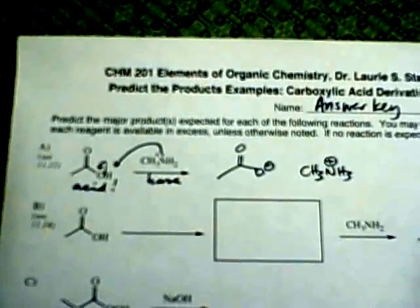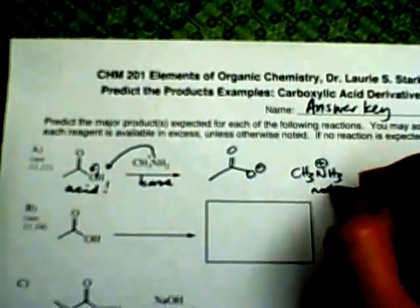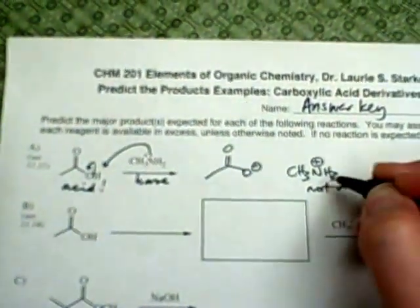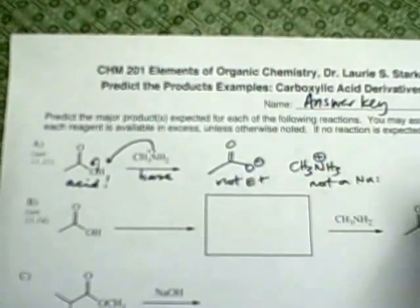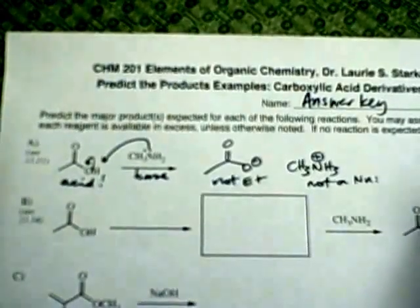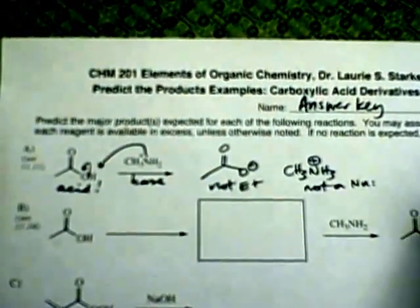And once that happens, this is no longer a nucleophile because it's protonated. You don't have a lone pair. This is no longer an electrophile because it's negatively charged. And so the reaction stops here. We don't have a substitution reaction.